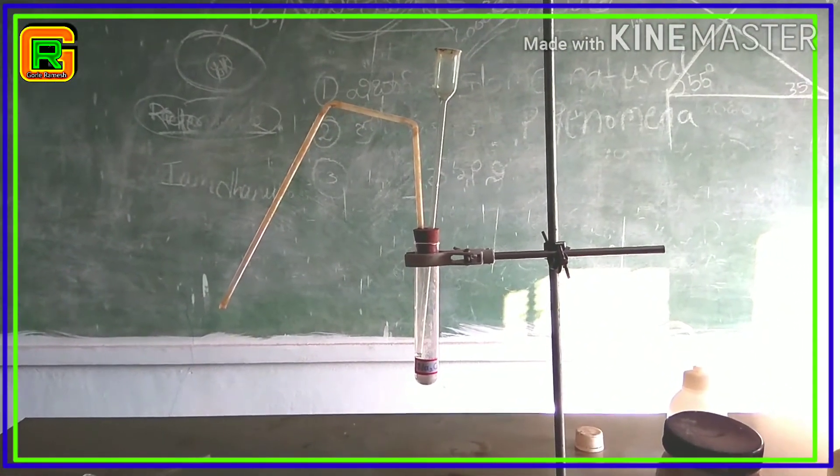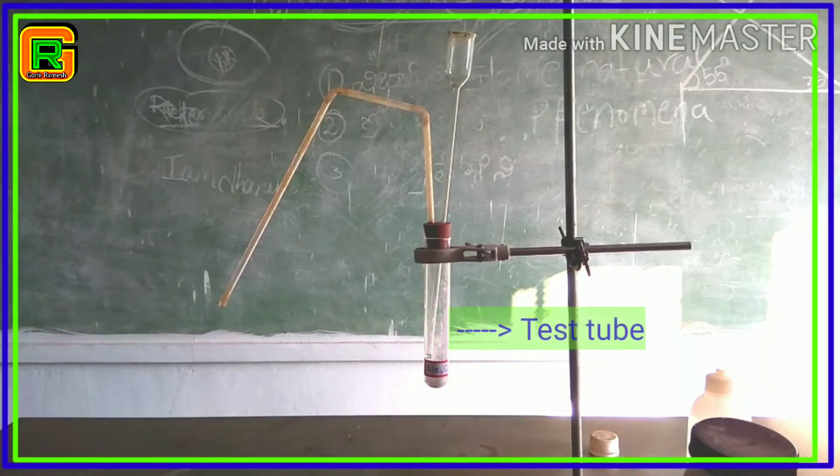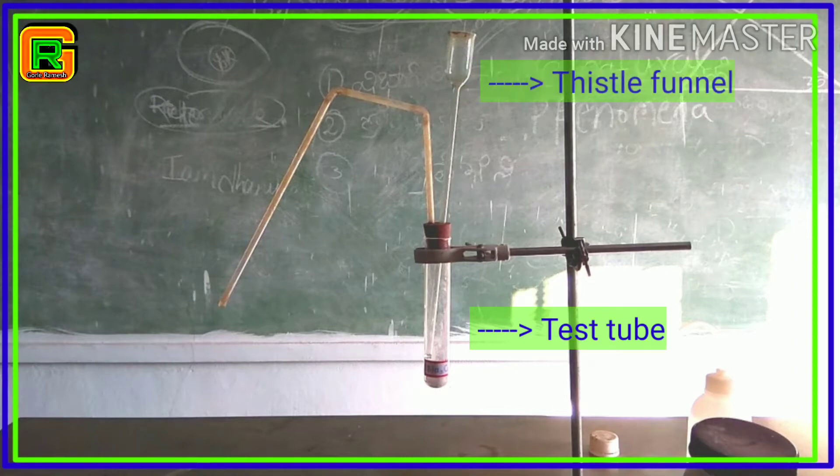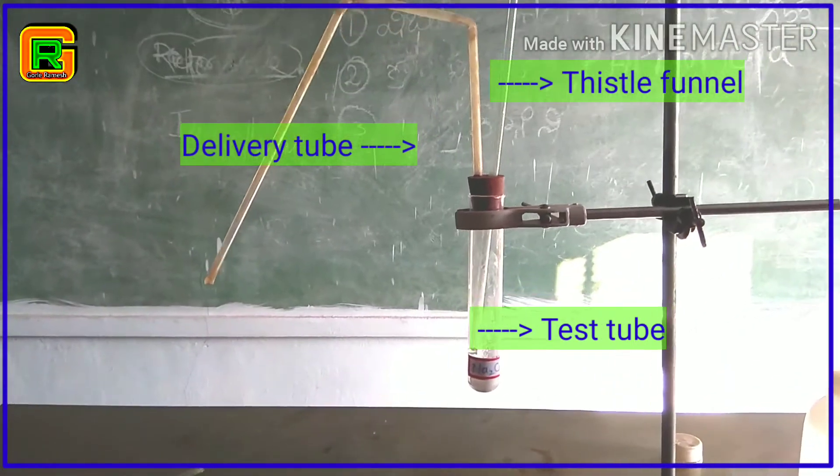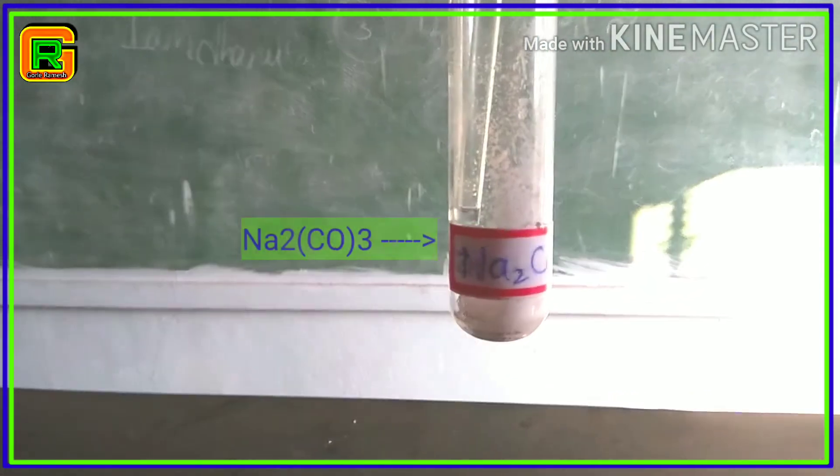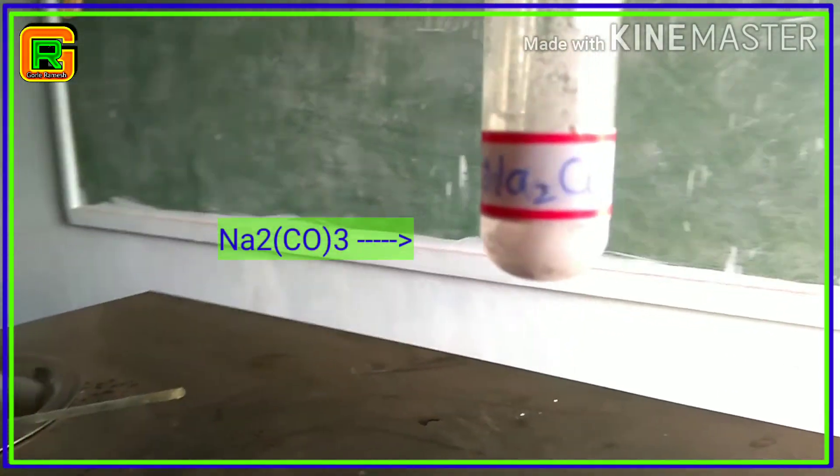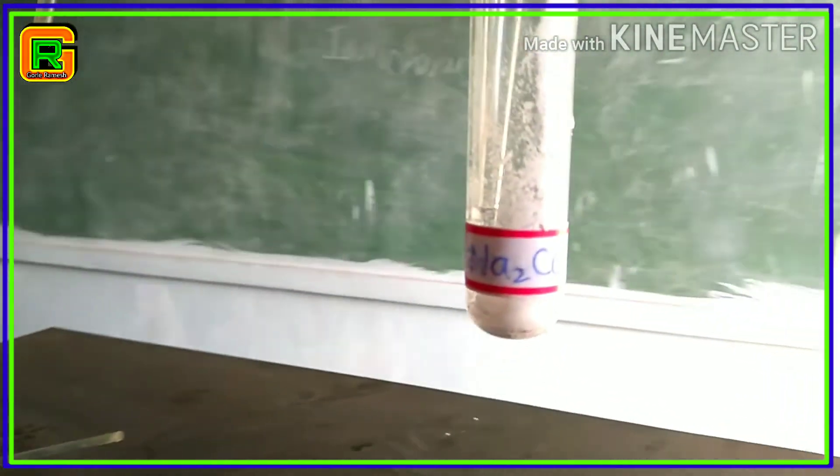Arrange the apparatus as shown in the figure. This is test tube, this is thistle funnel, and this is delivery tube. First of all, take a small quantity of sodium carbonate in the test tube, that is Na2CO3.